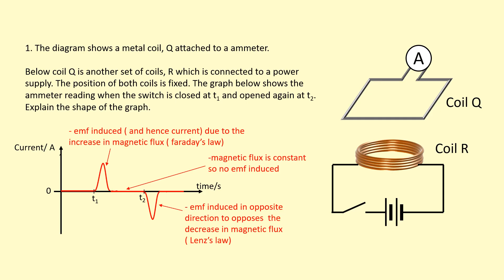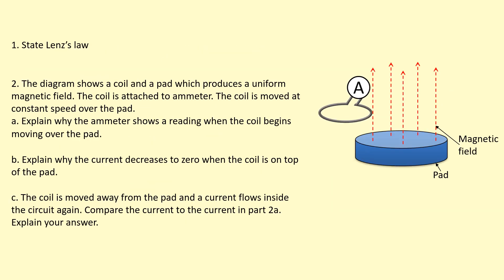Lenz's Law shows the current is in the opposite direction, opposing the decrease in flux. There's going to be a force between coil Q and coil R — initially pushing them apart when there was an increase in flux, then zero when there's no change, and then trying to pull them together when there's a decrease in flux. But because they're fixed, they won't move.